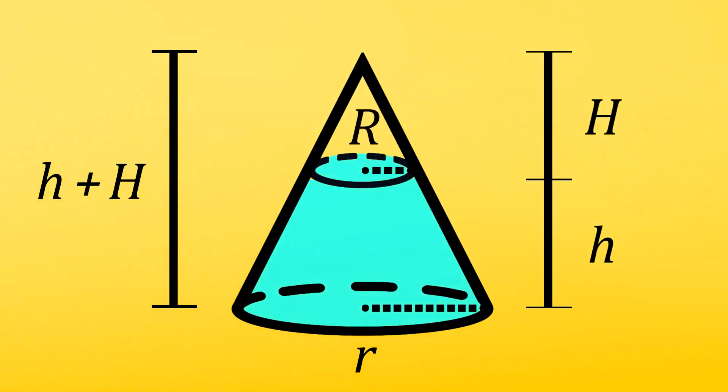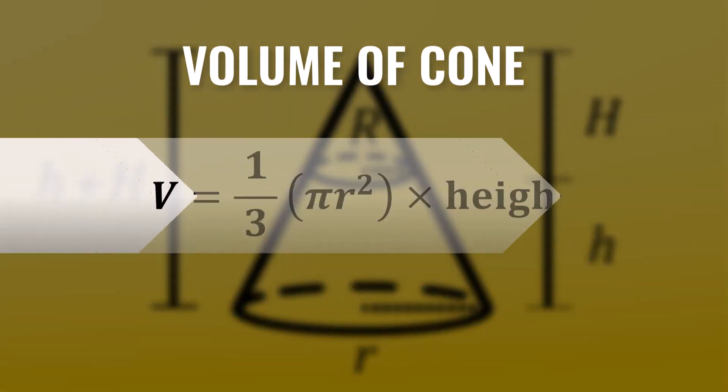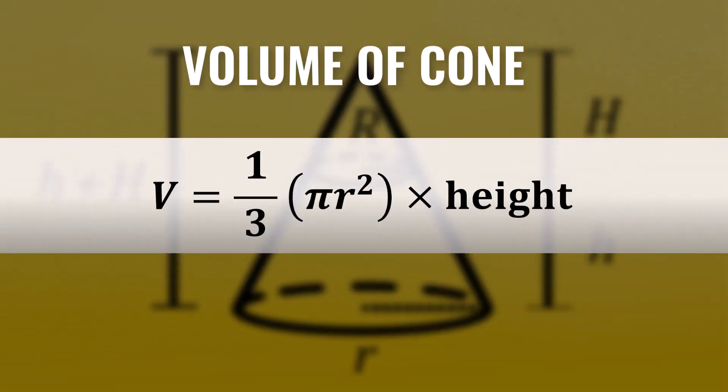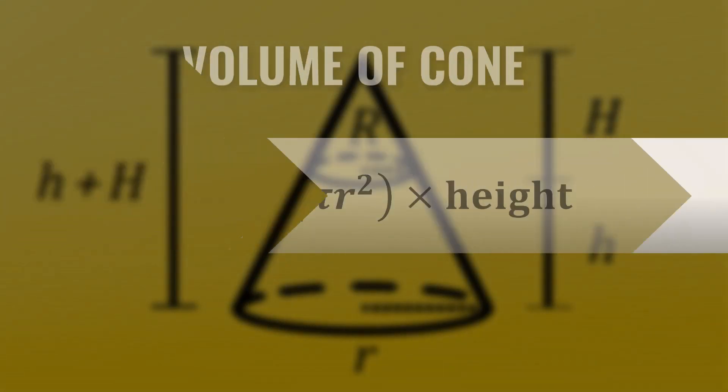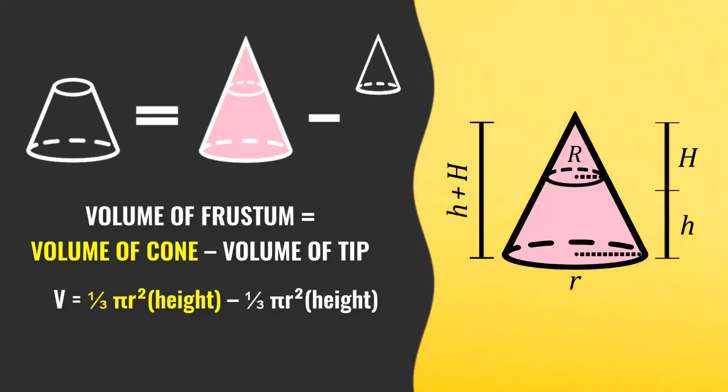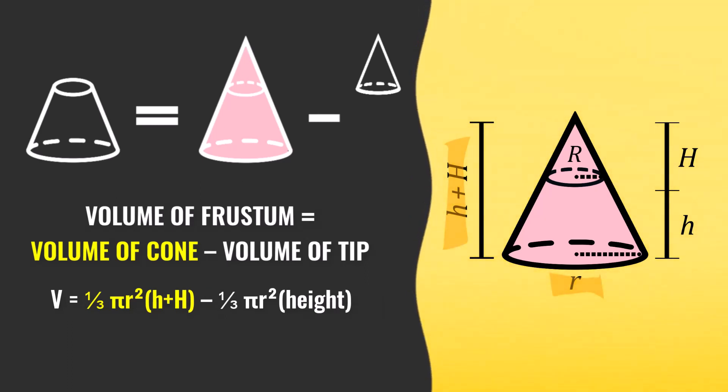To find the volume of the frustum, we must subtract the volume of the tip from the total volume of the cone. One prerequisite for this is knowing that the volume of a cone is found using the formula V equals one-third pi r squared times the overall height. For the entire cone, its height is the sum of the two h's we defined earlier. Substituting this into the formula, along with lowercase r, gives us an equation for the volume of the entire cone.